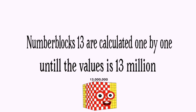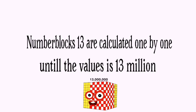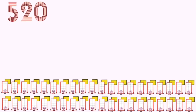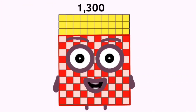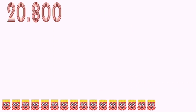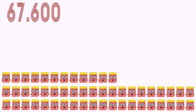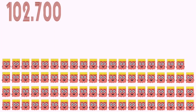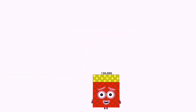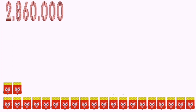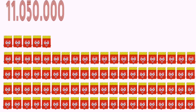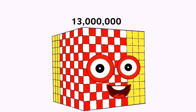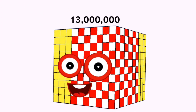Number blocks 13 are calculated one by one until the value is 13,000,000. Values: 13,000. 130,000.